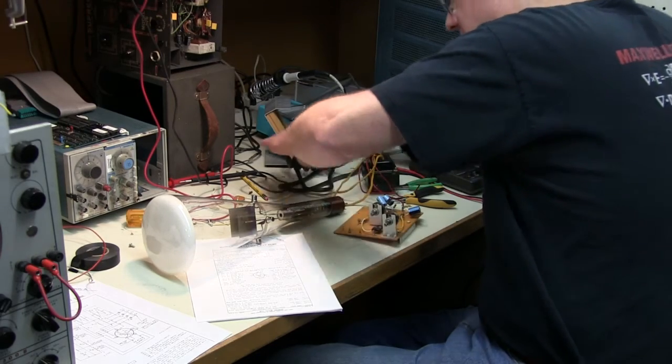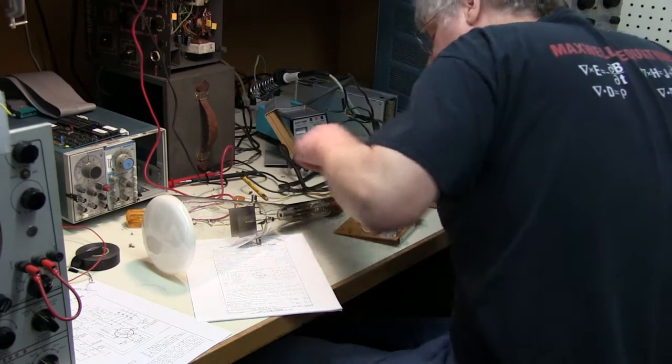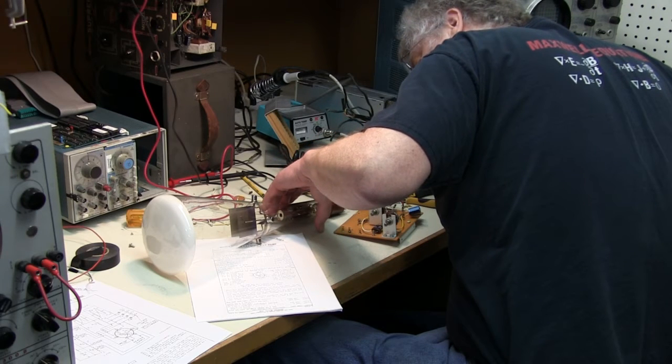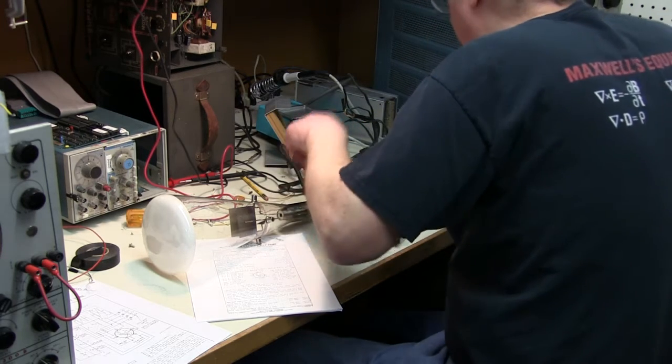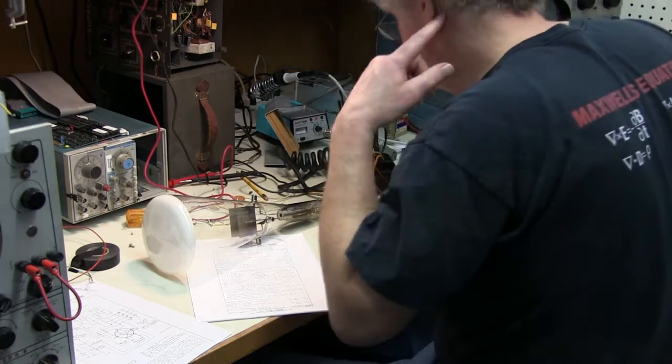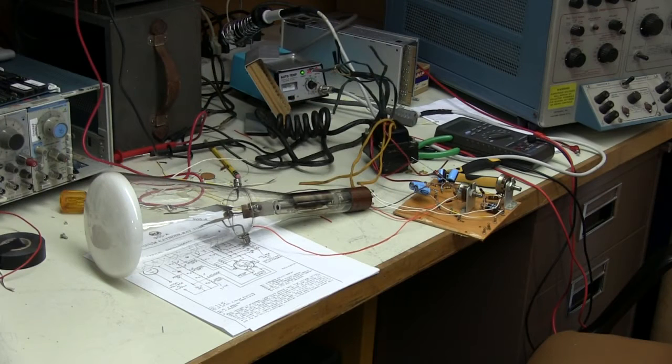Here I am firing up the CRT for the first time, checking for the glow of the filament. It has a two and a half volt, two amp filament. The power transformer had a five volt center tap winding for a rectifier, so we used half of that winding for the two and a half volts for the filament for the CRT.